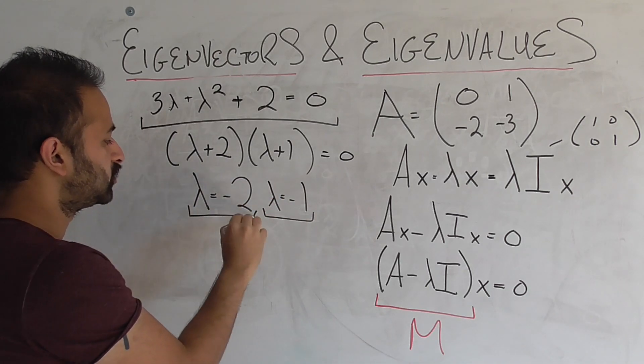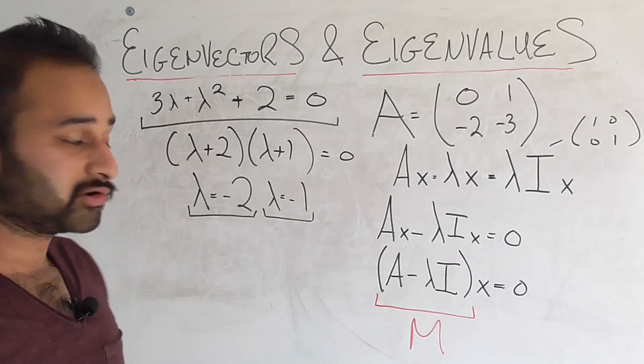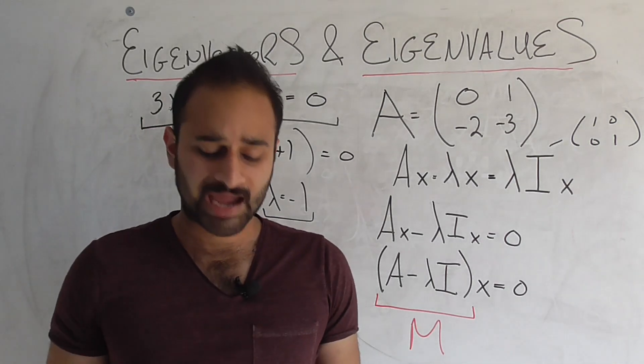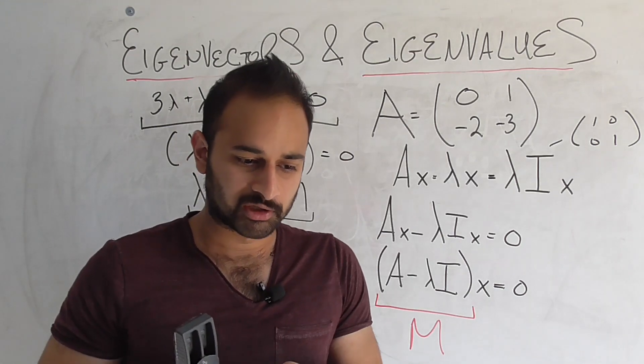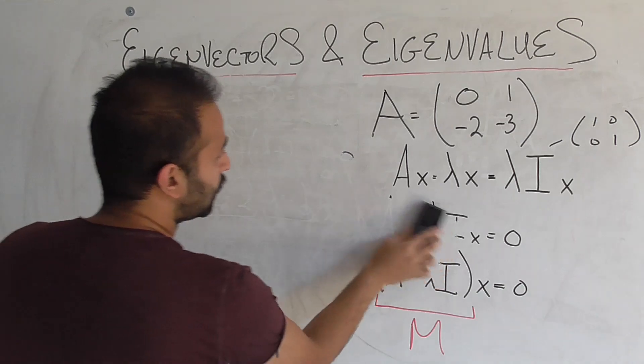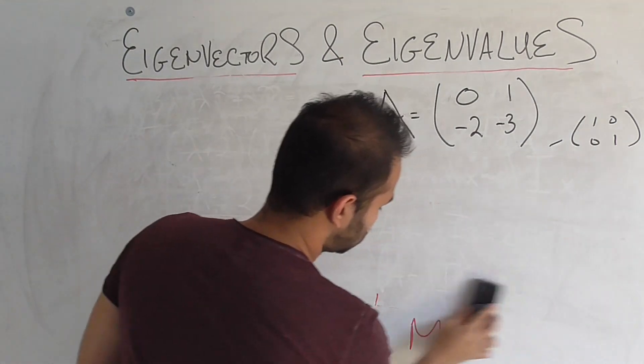Awesome. So we solved for the two eigenvalues. Remember, lambdas are the eigenvalues. They are negative 2 and negative 1. Now the only question is, how do I find the corresponding eigenvectors? Let's do it for one of them. Let's pick lambda equals negative 1.